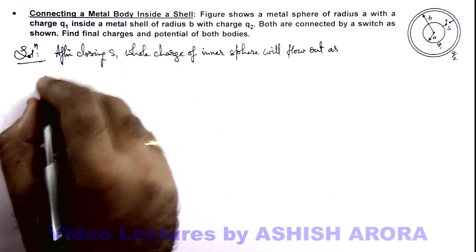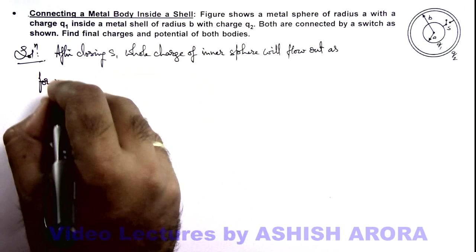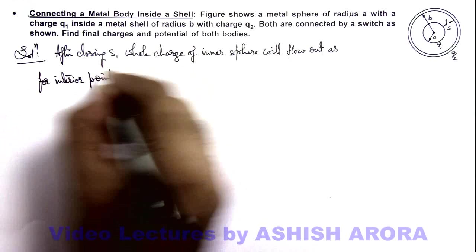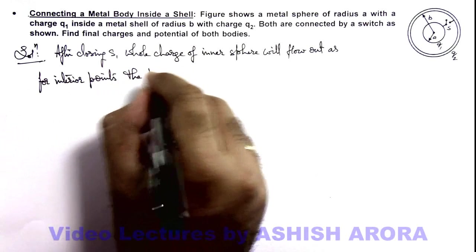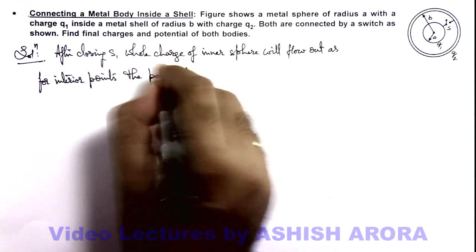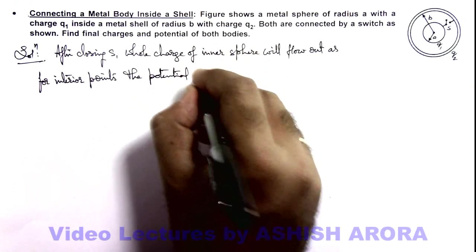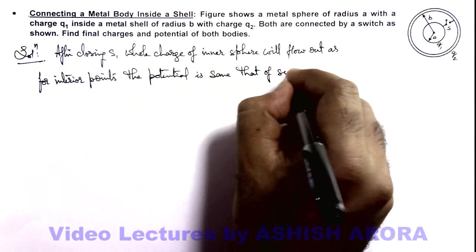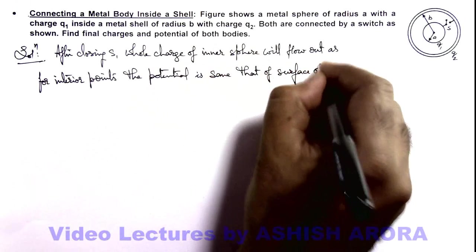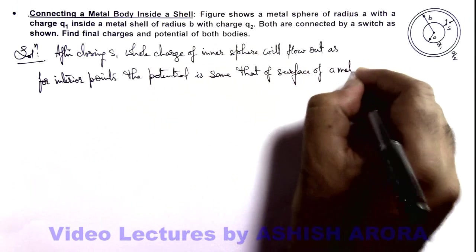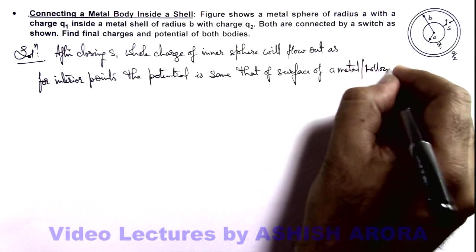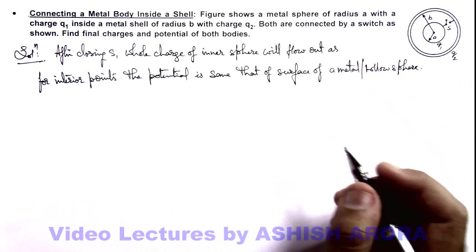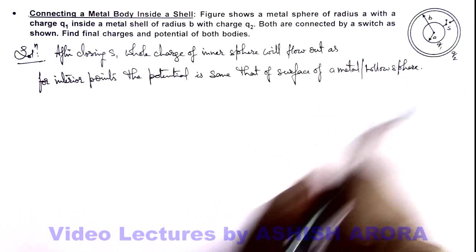As for interior points, the potential is same as that of the surface of a metal or hollow sphere which is charged. We already studied that if a metal sphere is charged, at every interior point the potential is same.